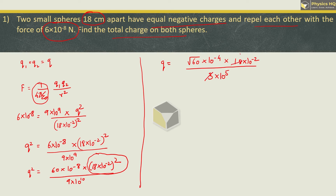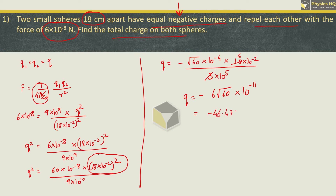So it is 3, 6, 18. Also, the sign will be negative because the problem states the charges are negative. So Q is equal to minus 6×10⁻⁴ combined with 10⁻² giving 10⁻⁶, which simplifies to minus 4.647×10⁻¹⁰ coulomb for the individual charge.